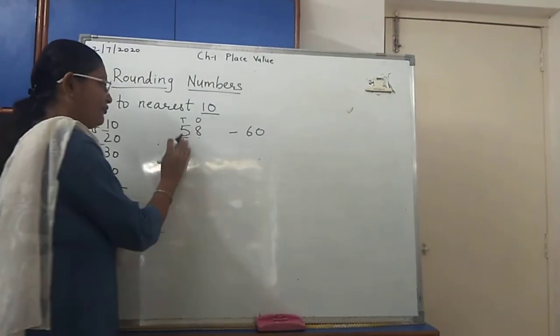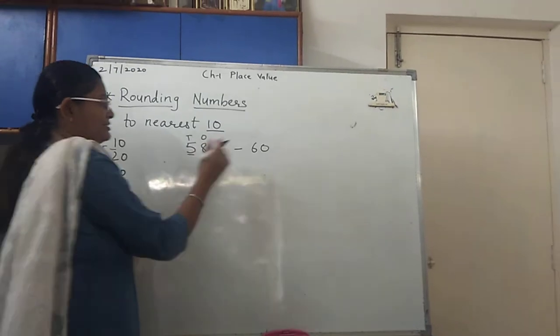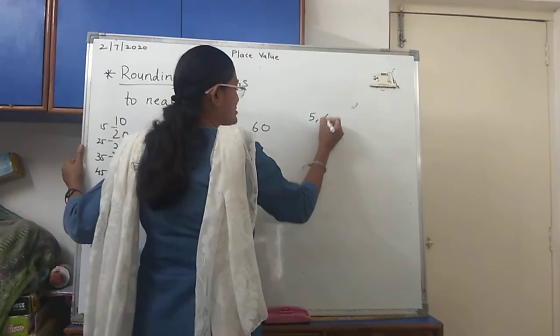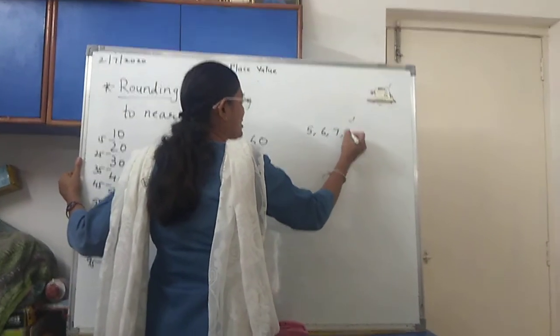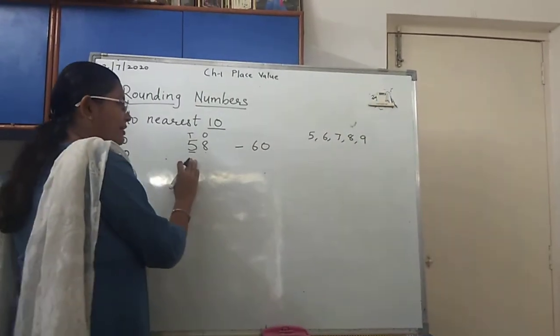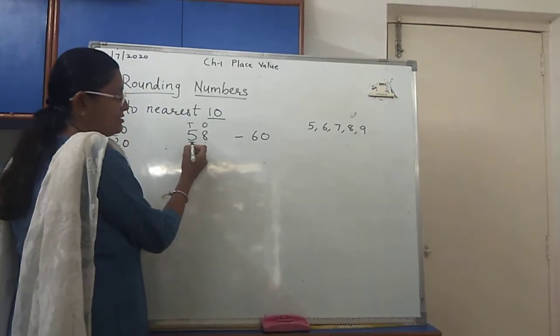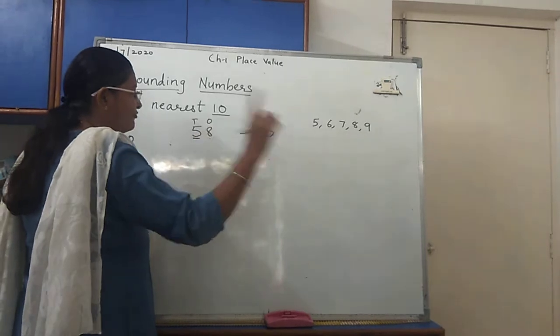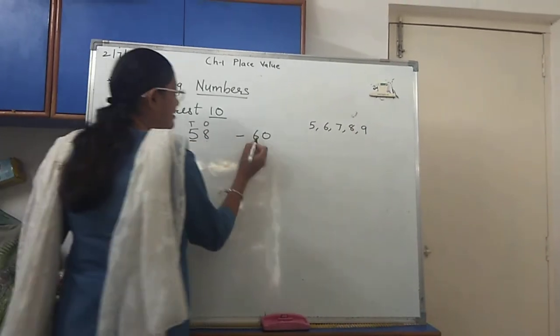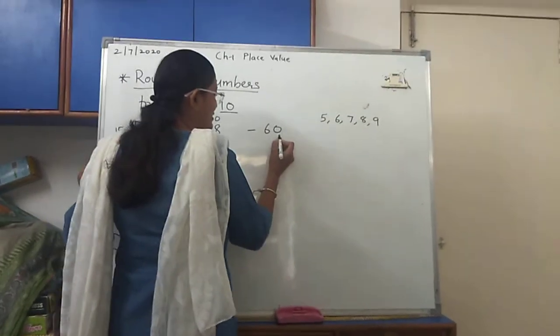If the next number after 10s place, means at 1s place, if the digit is 5, 6, 7, 8, or 9, then that number is having power in it. So it will change this number. Then you have to change 5. You have to add 1 in 5, and you have to write 6 over here. And instead of 8, you have to write 0.